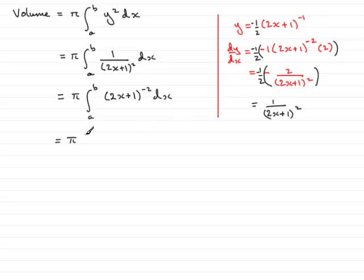So in here I will put minus a half of (2x plus 1) to the minus 1, between the limits a and b.